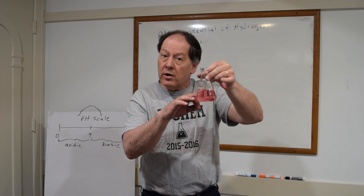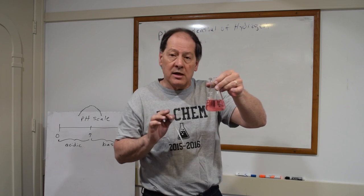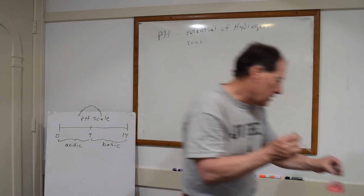So universal indicator is really good for seeing a range of pHs. So again, pH 4 and lower is red. pH 5 would be orange. pH 6 would be yellow. And then pH 7 would be the green.